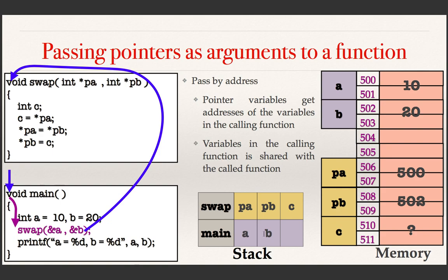Pointer variables get addresses of the variables in the calling function — here they get the addresses of a and b. Variables in the calling function (main) are shared with the called function (swap), because swap can now access the value of a through pointer pa. If it says *pa, it reads pa (which is 500), uses it as an address, goes to 500 and accesses its value — which is actually the value of variable a in main. Thus through pointers, you get a chance to share variables of the main function with the swap function.